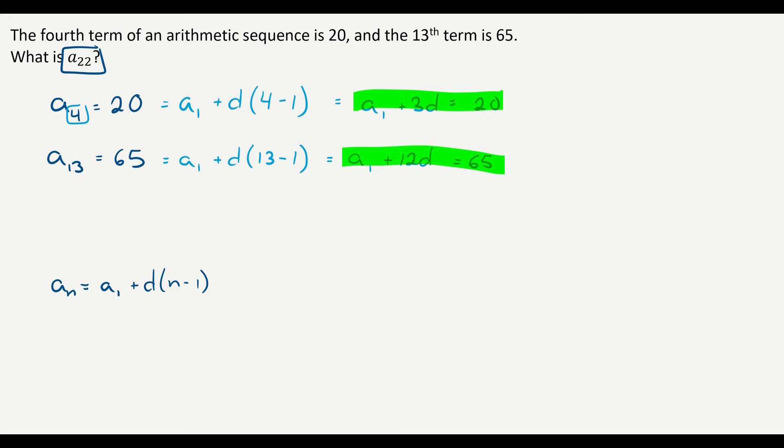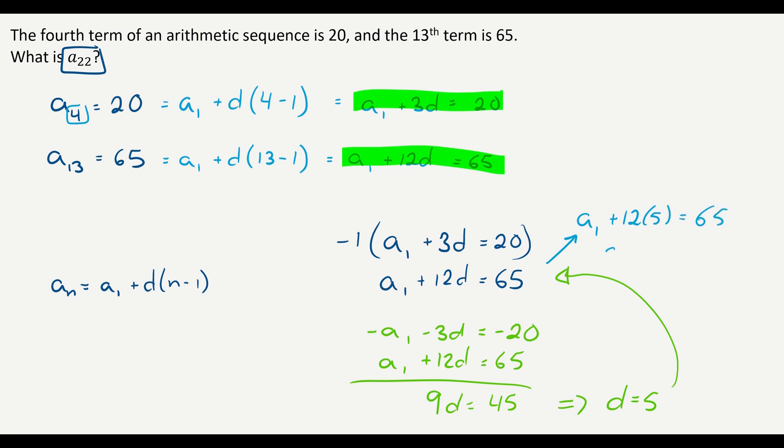So we have to solve a system of equations. I'm going to rewrite them down here. And let's solve this by elimination. I'll multiply the first equation by negative one. So that gives me negative a sub one minus 3d equals negative 20. And we can add it to the second equation. And we get zero a sub one, negative three plus 12 is 9d, negative 20 plus 65 is 45, divided by nine, d equals five. Plug that into the equation. And we get a sub one plus 12 times five equals 65. A sub one plus 60 equals 65. And a sub one is five.